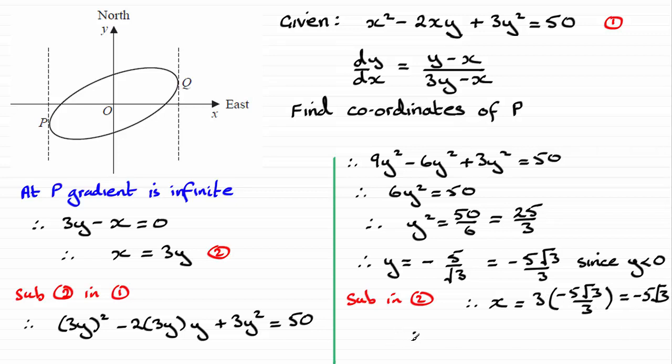So therefore the coordinates of P, if we just summarize, are going to be minus 5 root 3 for the x coordinate. And for the y coordinate, it's up here, minus 5 root 3 over 3.